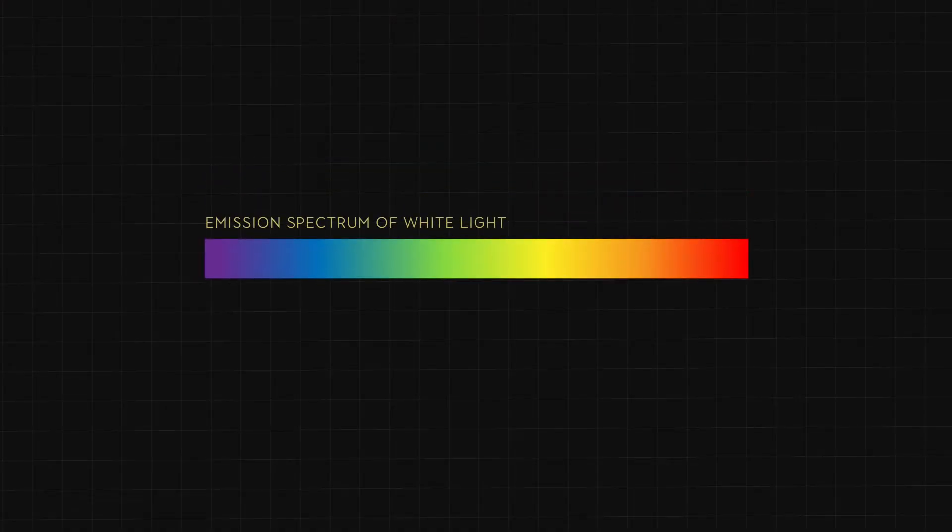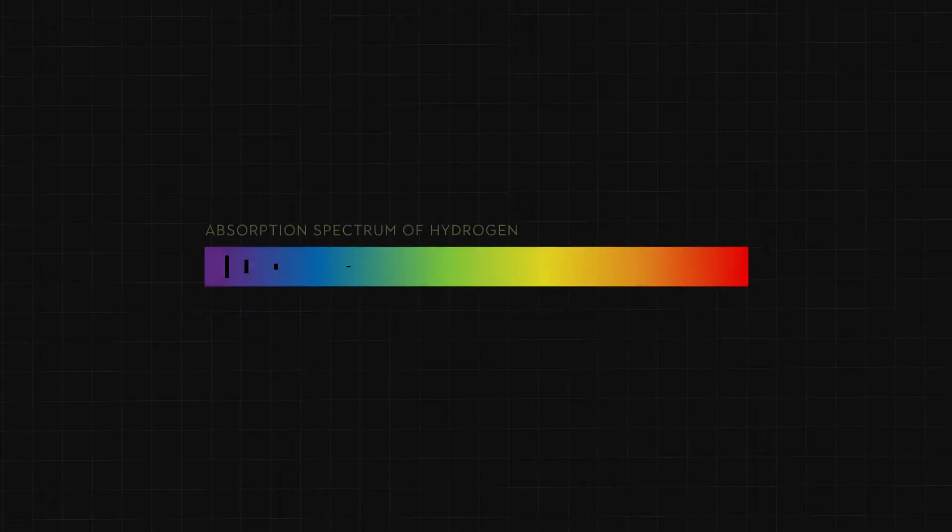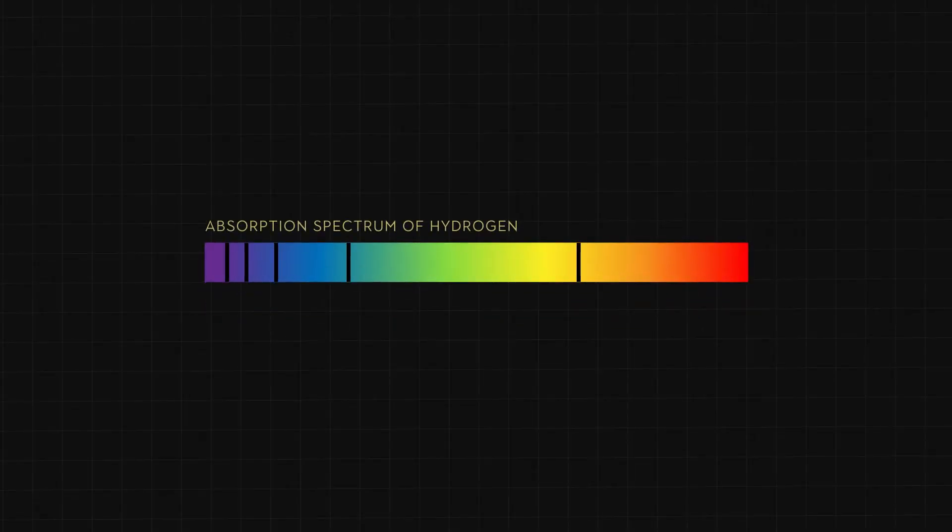Let's say we shine white light on an atom. White light is the mix of all the colors of the rainbow. But the atom doesn't absorb all of these colors — it absorbs only light from very specific colors. The absorption spectrum of an atom shows these colors as black lines.